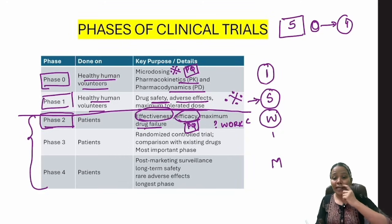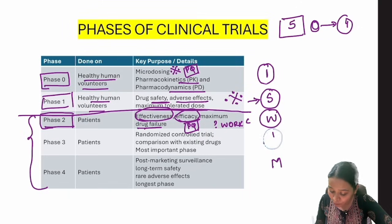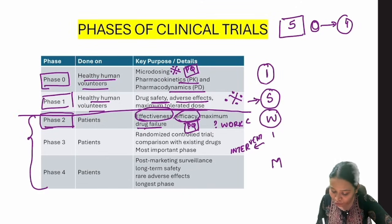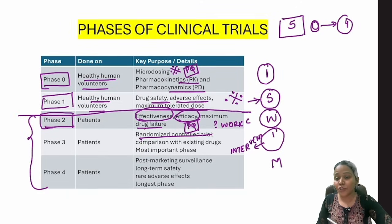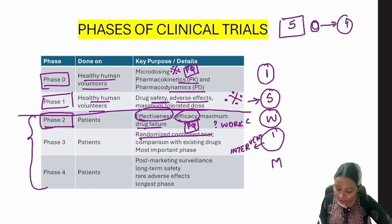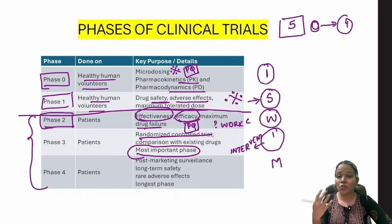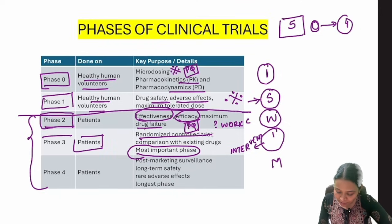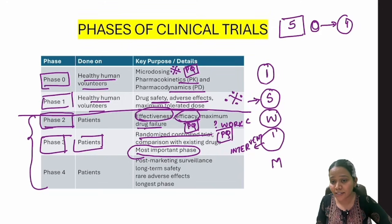Phase 3 corresponds to 'I' in I SWIM — 'I' for Intervention. The study that involves intervention is the Randomized Control Trial (RCT). So Phase 3 is when the RCT is done: you take a group, give the drug to one group, withhold it from another, and compare. This is the most important phase because it's where evidence is generated. If a question asks in which phase an RCT is done, the answer is Phase 3.